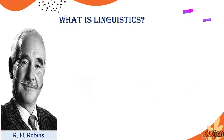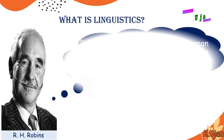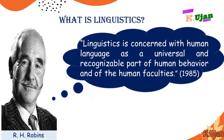Linguist R.H. Robbins explained that linguistics is concerned with human language as a universal and recognizable part of human behavior and of the human faculties — stated in 1985. According to him, linguistics is actually human behavior and the human faculties by which humans make sounds or human language for the exchange of messages. Basically, linguistics is the study of language as human behavior.